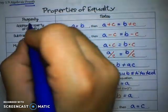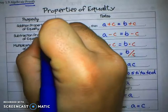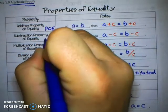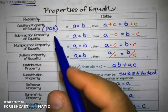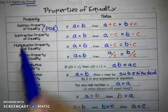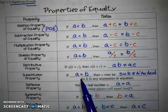And any of these, instead of writing property of equality, we can write P-O-E. I'm not going to make you write that every time, but as we do our examples later on, you'll see me writing P-O-E.